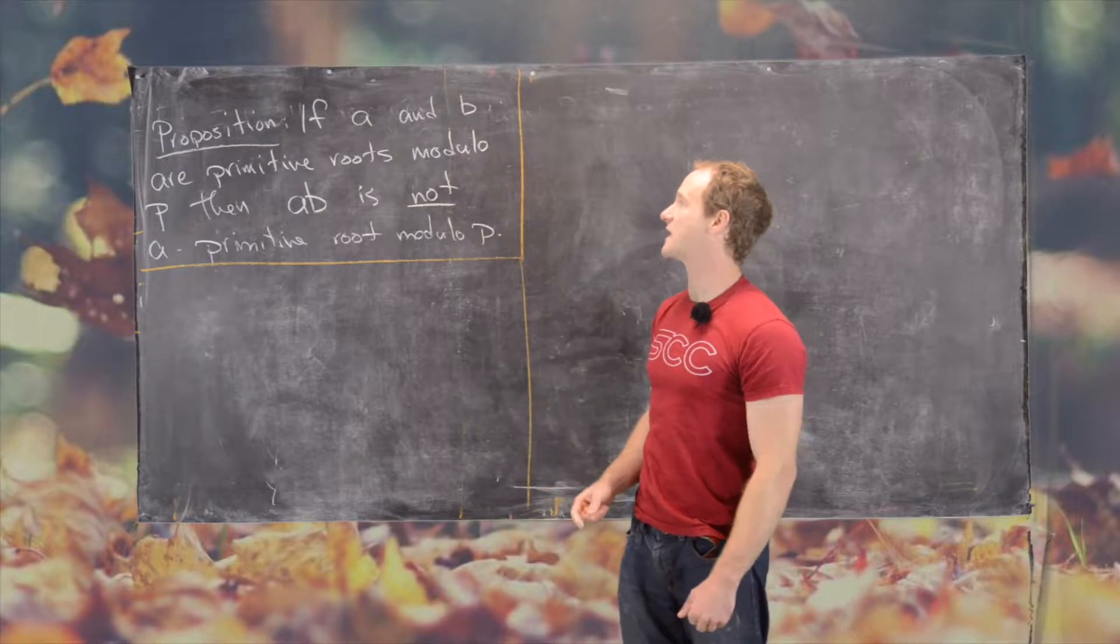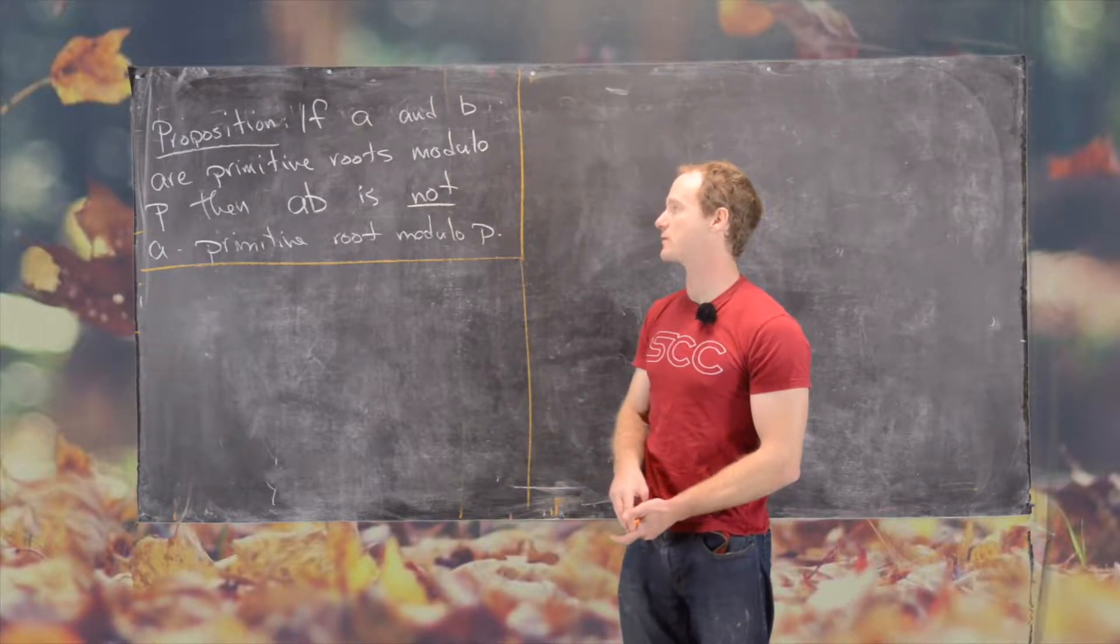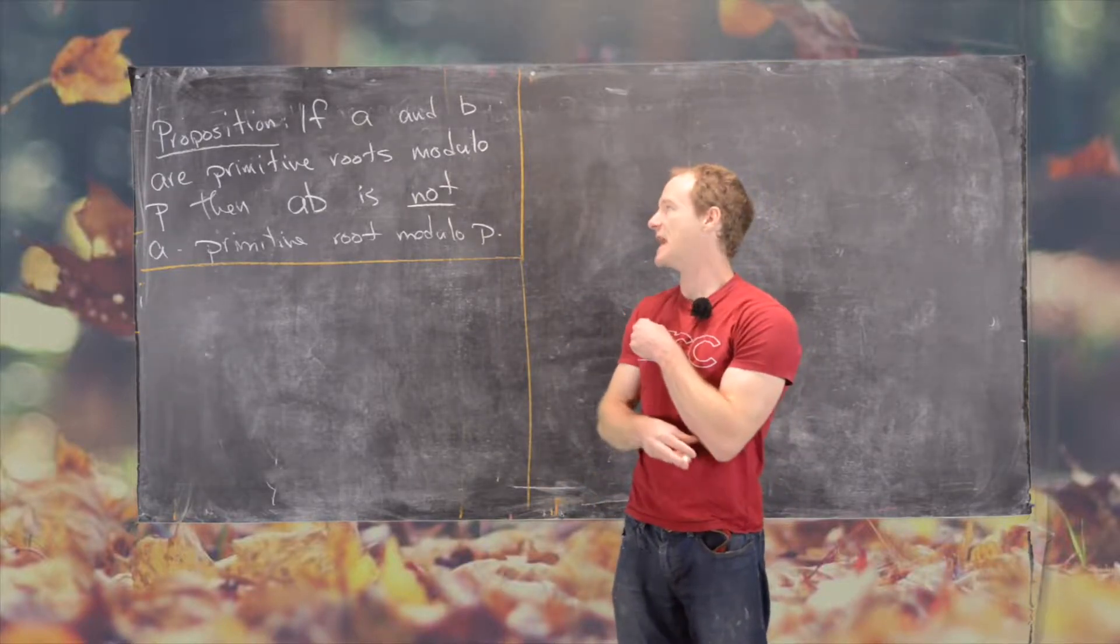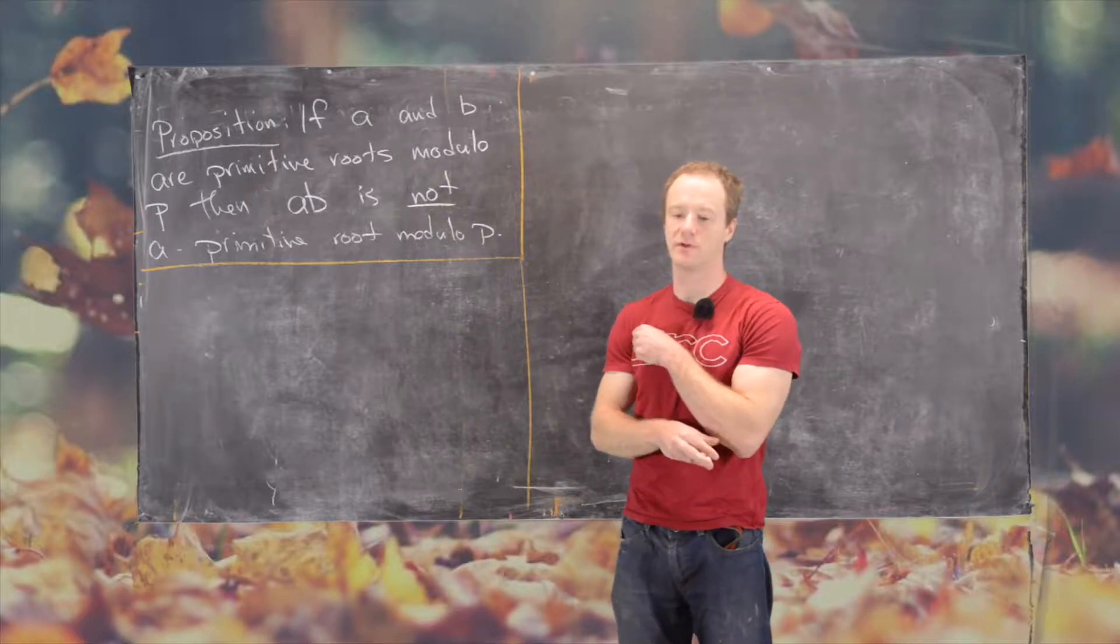And what we're going to prove here is that if A and B are both primitive roots modulo P, then A times B is not a primitive root modulo P.